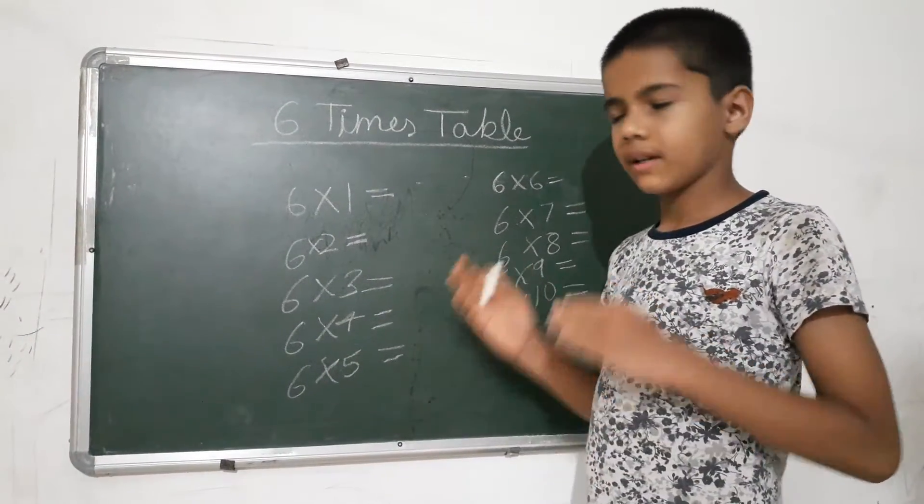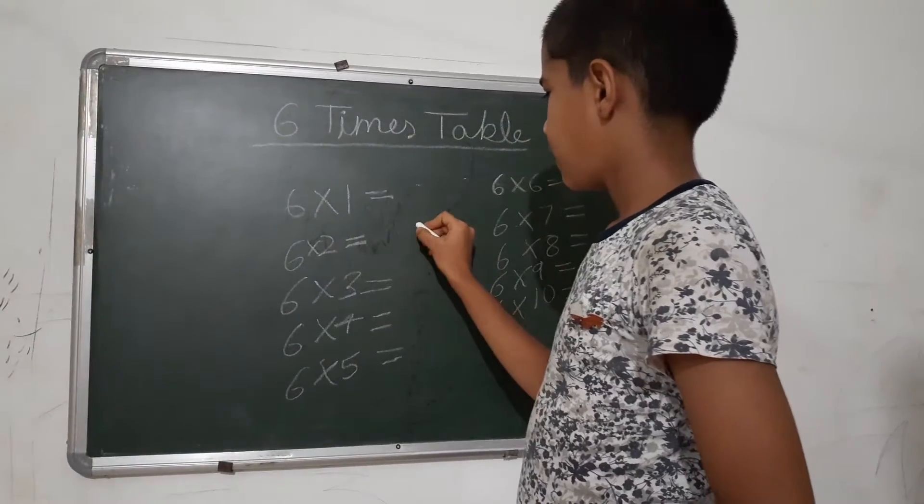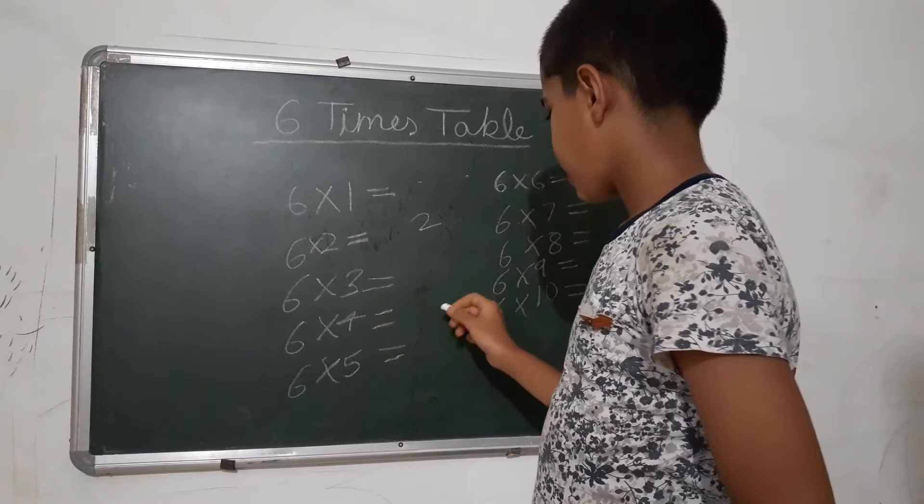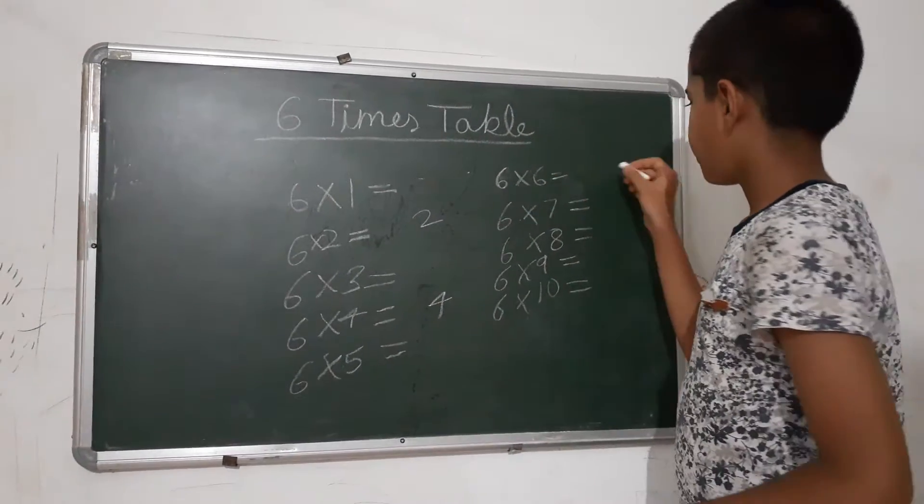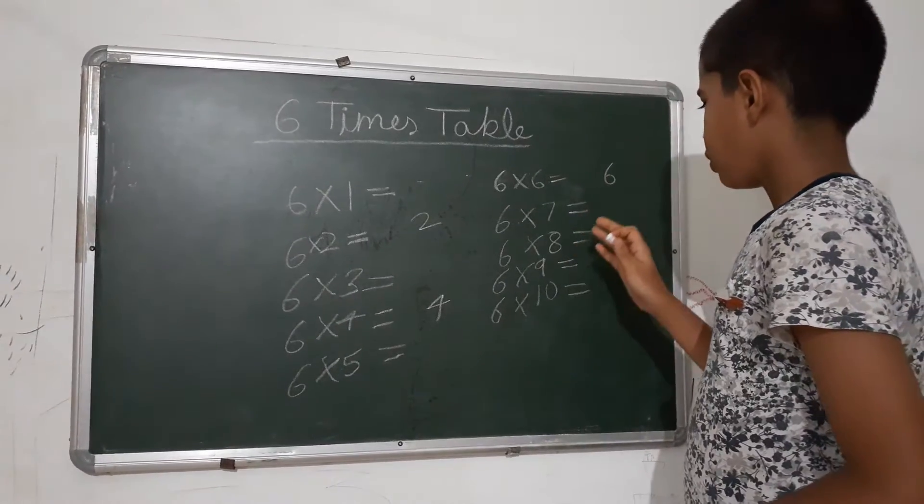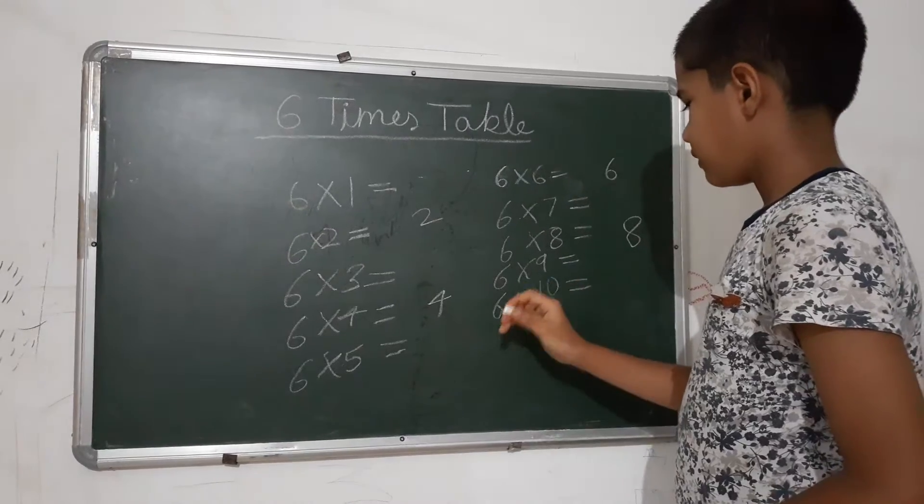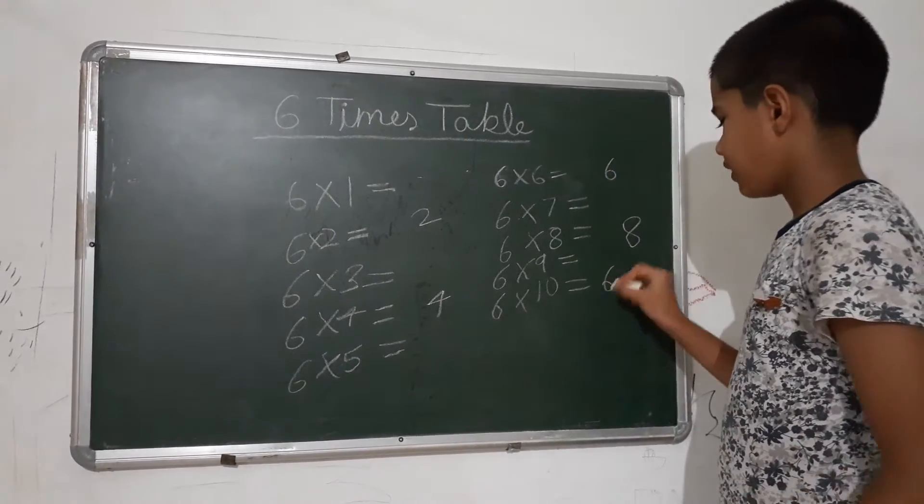Now we will see the even numbers, like 2, so we will write 2 here, 4, so we will write here, 6, so we will write it here, 8, so we will write it here, and 6 times 10, 60, so we will write it here.